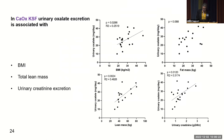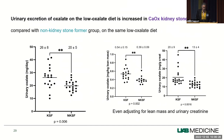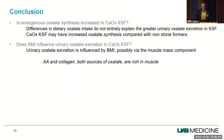Our conclusions are that differences in dietary oxalate intake cannot entirely explain the greater urinary excretion in stone formers. Calcium oxalate stone formers may have increased oxalate synthesis compared with non-stone formers. Urinary excretion is influenced by BMI, but possibly via the muscle mass component — people with greater BMI also have greater lean mass, which could be explained by muscle being rich in collagen, a source of oxalate, and also ascorbic acid.